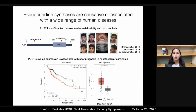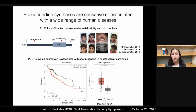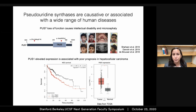Now, these diseases could be due to loss or gain of pseudouridines at target RNAs, but in order to understand how pseudouridines contribute to these diseases, we need to know where they are and what they do.